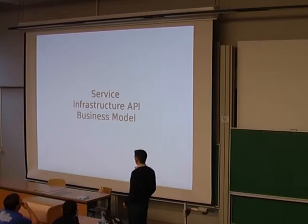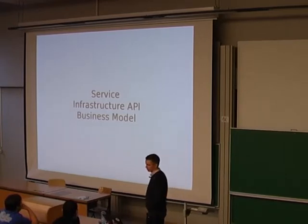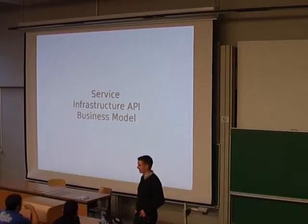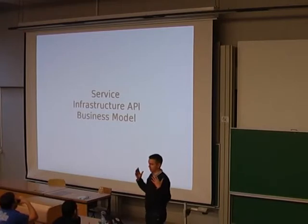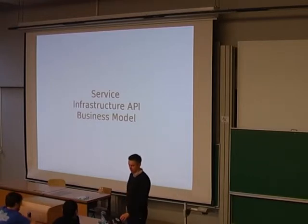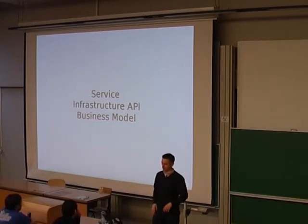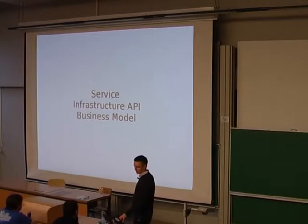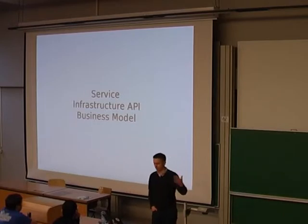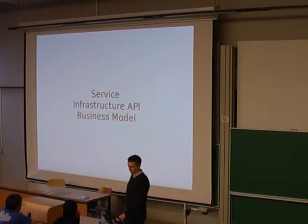So if OpenStack users are trying to build an Amazon-style cloud, what is that? It's a service, first of all. Someone is trying to be a supplier of a utility — a computing utility — whether it's compute, storage, or networking. They're trying to supply that as a utility or commodity, and they're doing that via an API. Most importantly, they're trying to build a business model around this. Even if it's a non-profit organization offering a cloud, there's still got to be some business model that makes it possible to offer that service.